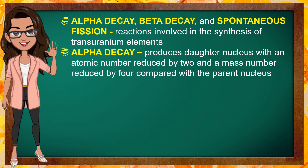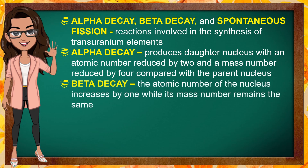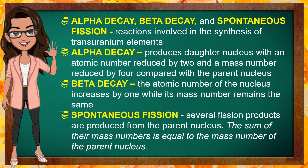The nuclear decay reactions involved in the synthesis of transuranium elements are alpha decay, beta decay, and spontaneous fission. Alpha decay produces a daughter nucleus with an atomic number reduced by 2 and a mass number reduced by 4 compared with the parent nucleus. In beta decay, the atomic number of the nucleus increases by 1 while its mass number remains the same. In spontaneous fission, several fission products are produced from the parent nucleus. The sum of their mass numbers equals the mass number of the parent nucleus, and the sum of their atomic numbers equals the atomic number of the parent nucleus.